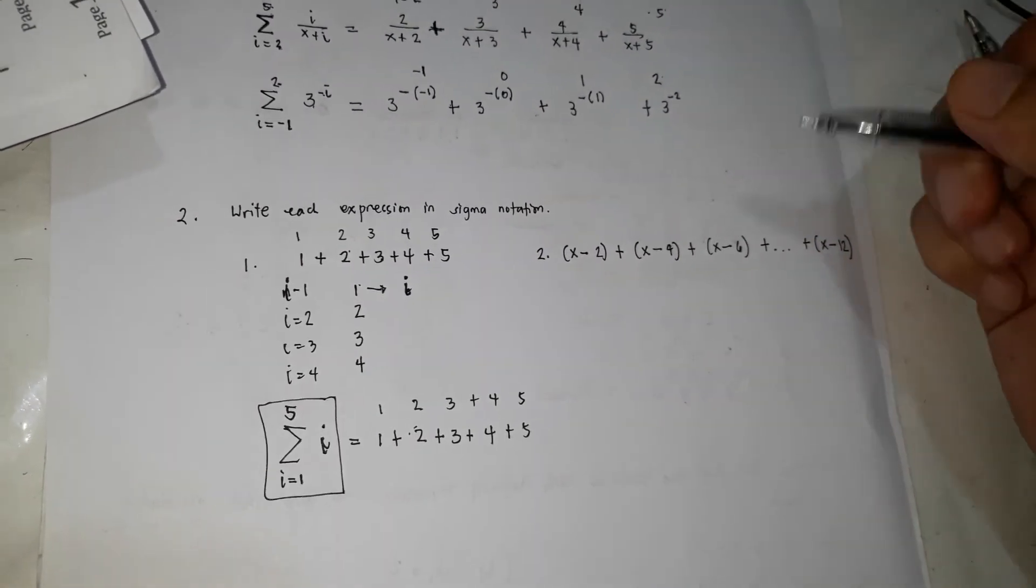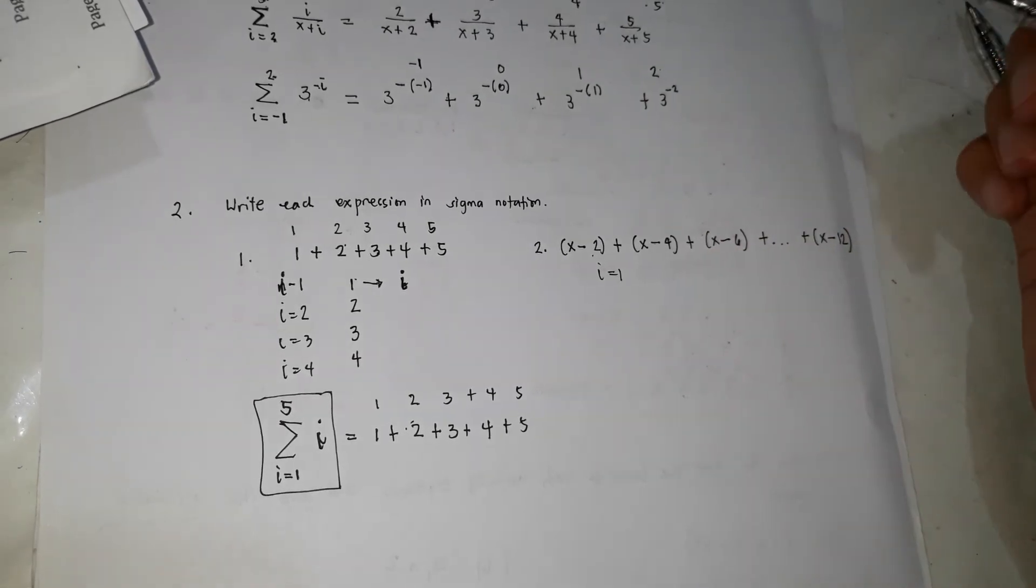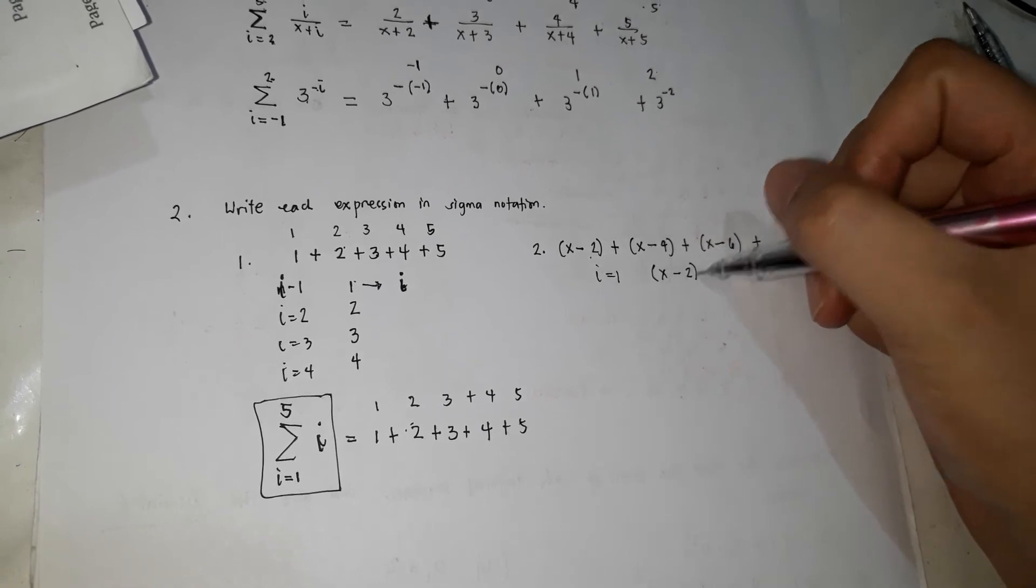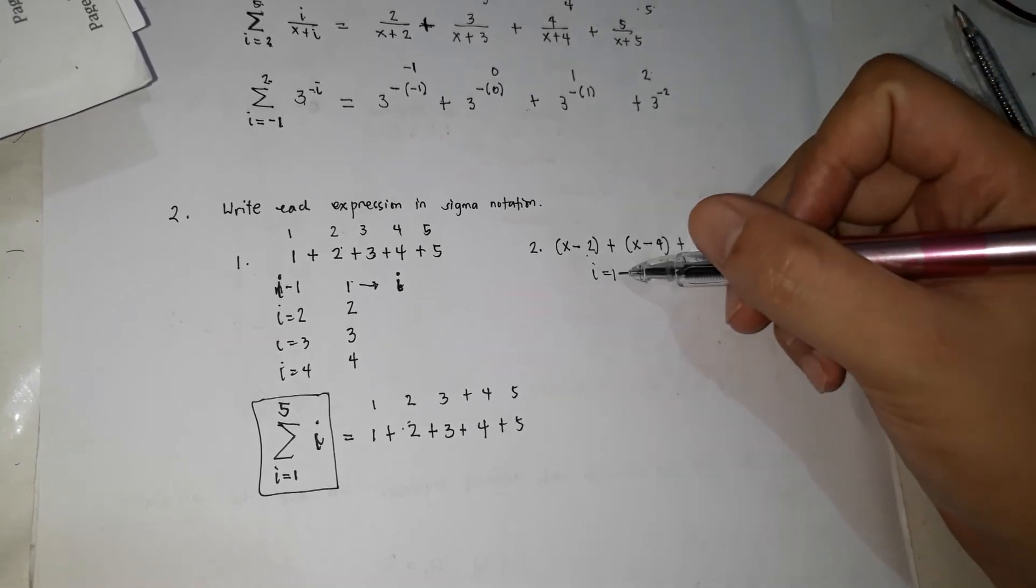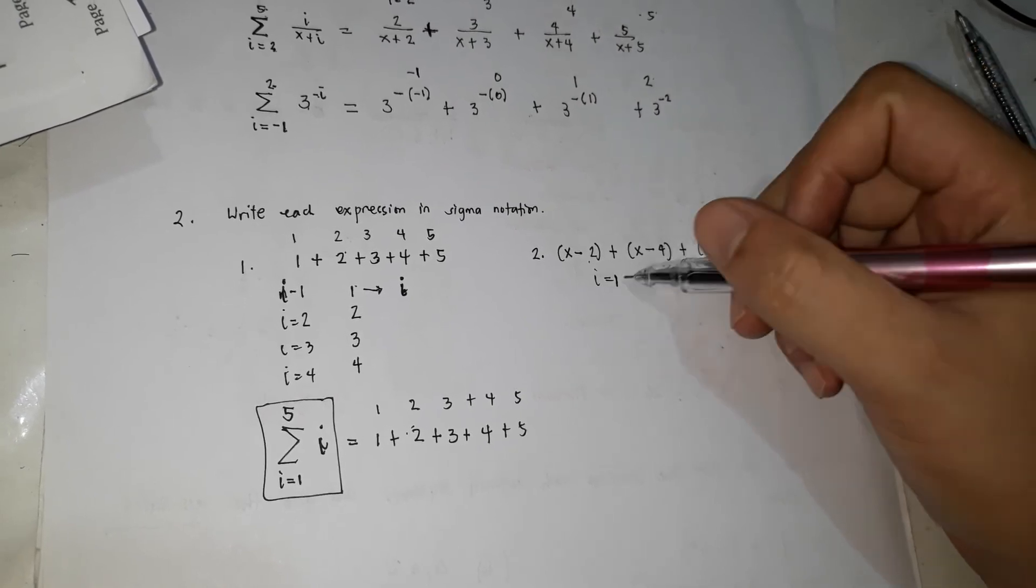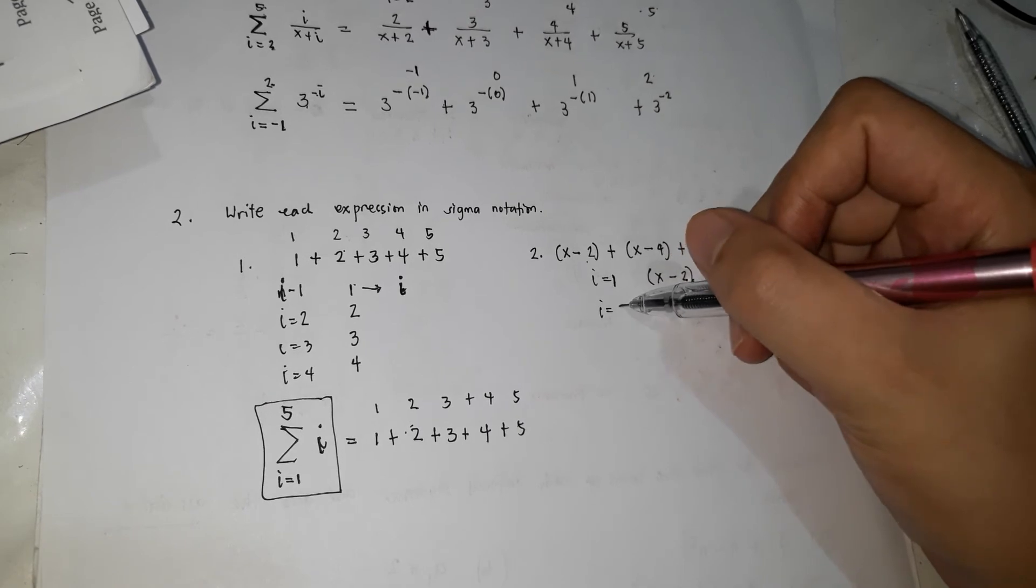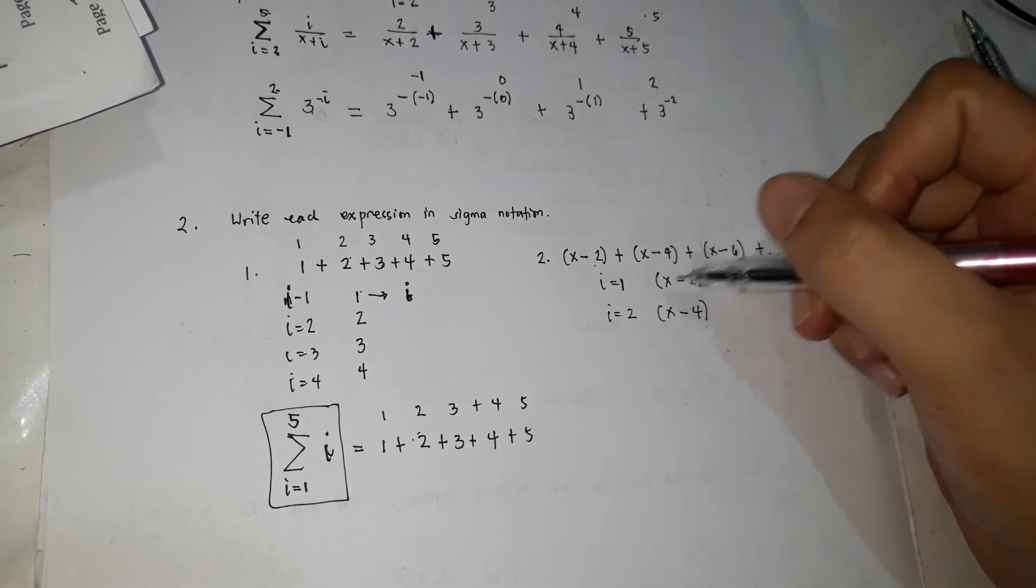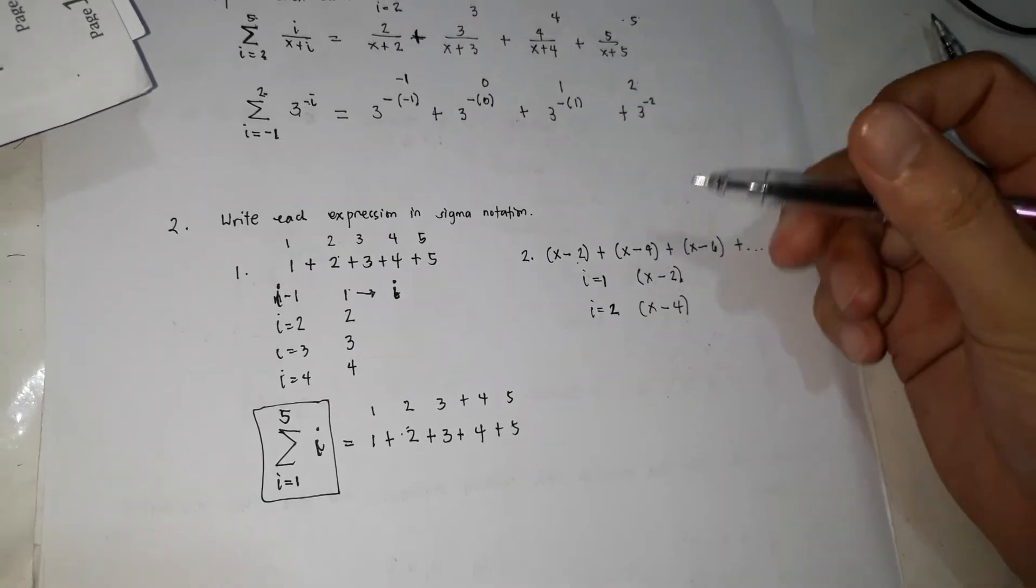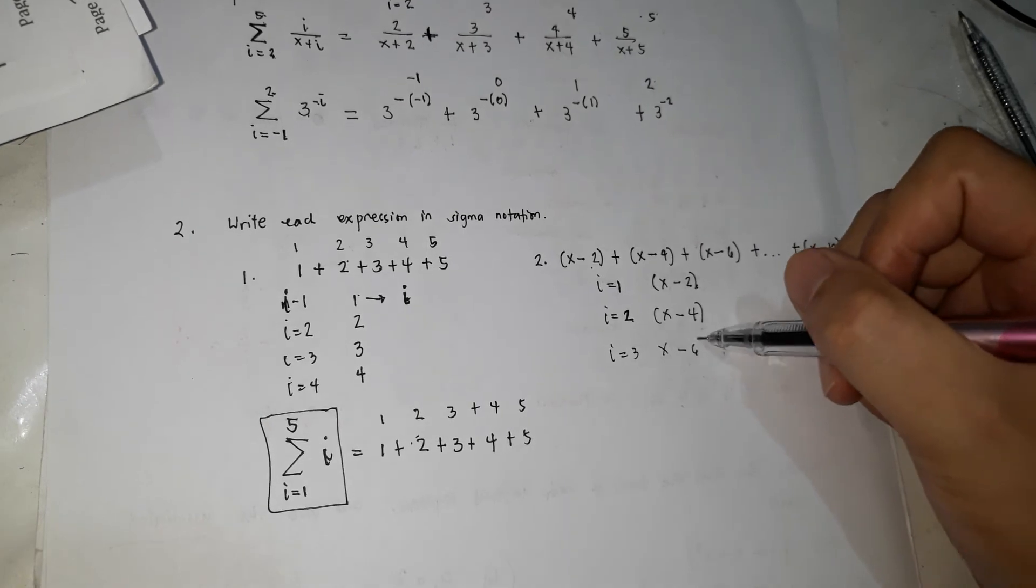Next, dito naman, ang first term, so i is equals to 1. Let's have it 1. So magiging x minus 2. So anong palagay mo? What's the relationship ng 1? Saan mo gagamitin ng 1 dyan? I is equals to 2. Magiging x minus 4. So saan mo gagamitin ng 2? What's the purpose of 2? When i is equals to 3, nagiging x minus 6.